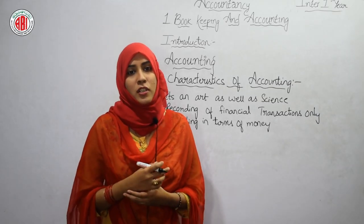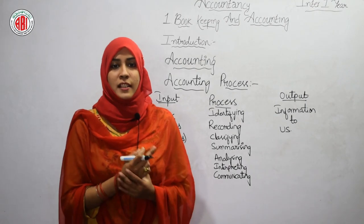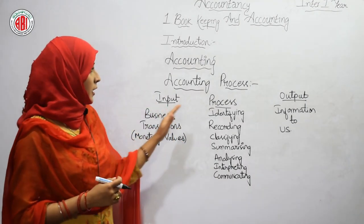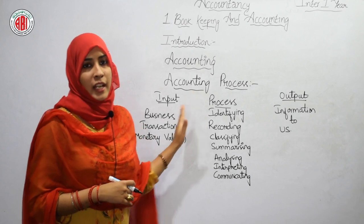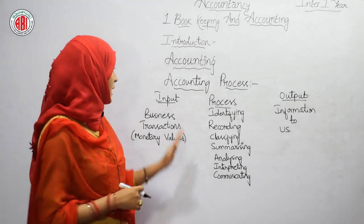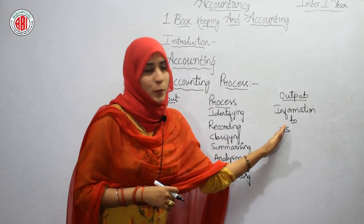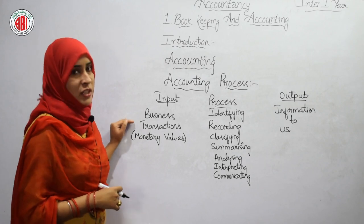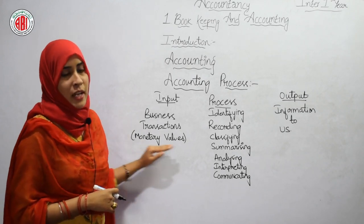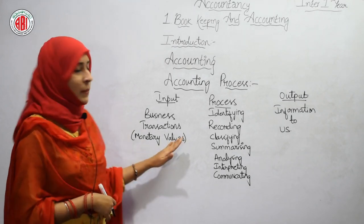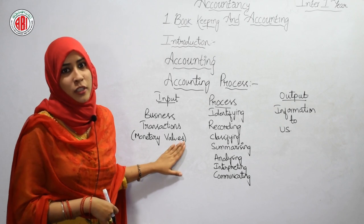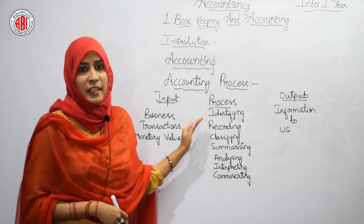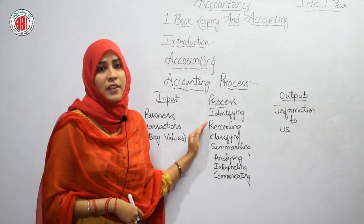Now let's see the process of accounting. In our accounting process, we have three phases: input, process, and output. In the input phase, we have business transactions in monetary value. Within this phase, there are seven steps, starting with identifying — we first identify what data is given in those business transactions.